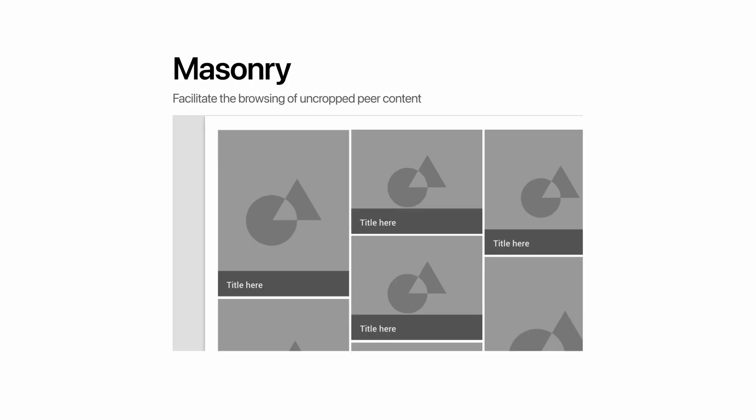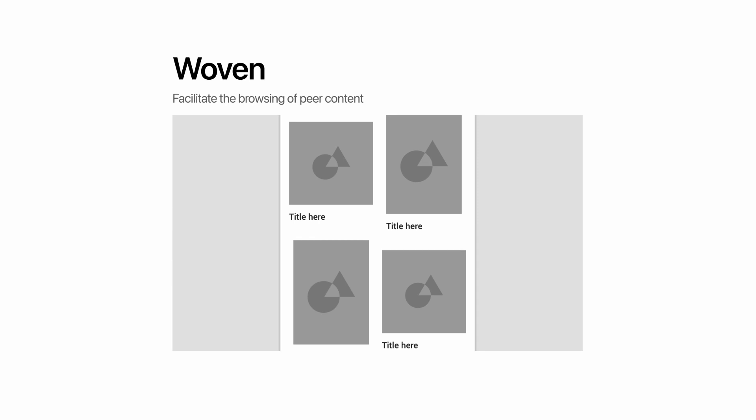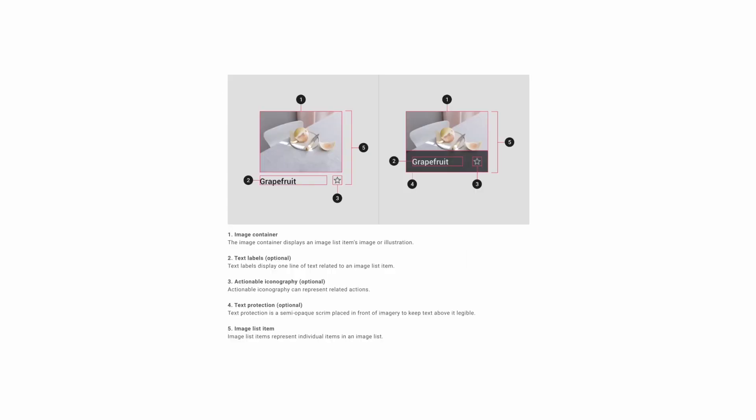Another image list type is masonry, which is best when you're browsing uncropped pure content. An example might be looking at a series of photographs from different photographers on their website. Finally, there's woven image lists, which is best when you're browsing pure content — for example, a collection of photographs from an interior designer.